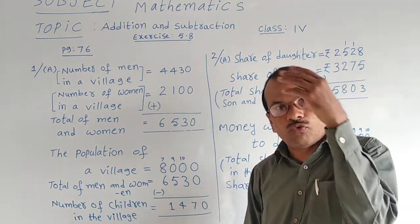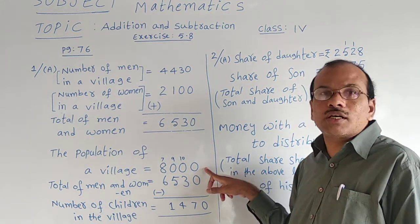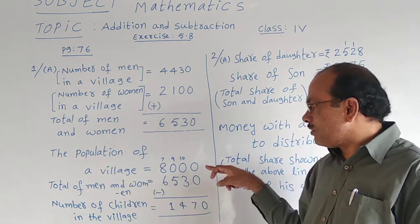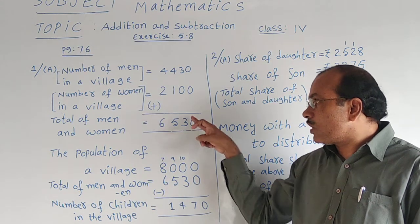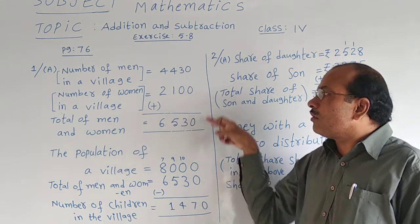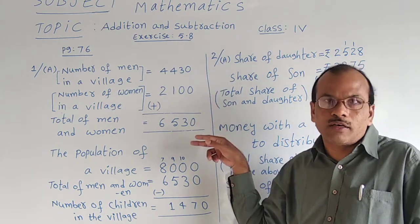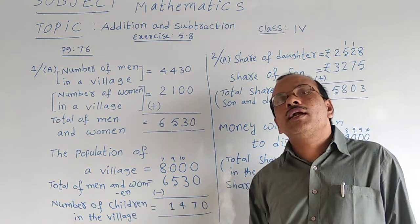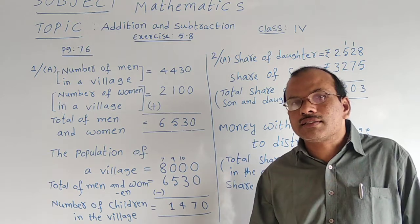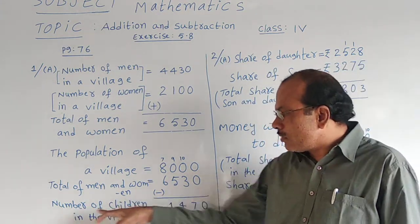The total population of the village means all the people — men, women, and children. Total population of the village is eight thousand. In that eight thousand, this many are men and women together, which is 6,530. So total population is eight thousand; total of men and women we got is 6,530. We need this addition here so that we can subtract to find the number of children in the village.